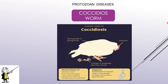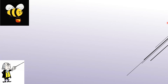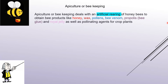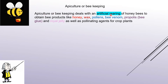Once you find that birds are down with disease, it is the role of the veterinarian to come and check the problem. The second topic we are going to study is apiculture. Whenever there is rearing of bees, that is called apiculture. Apiculture or beekeeping deals with the artificial rearing of honey bees.